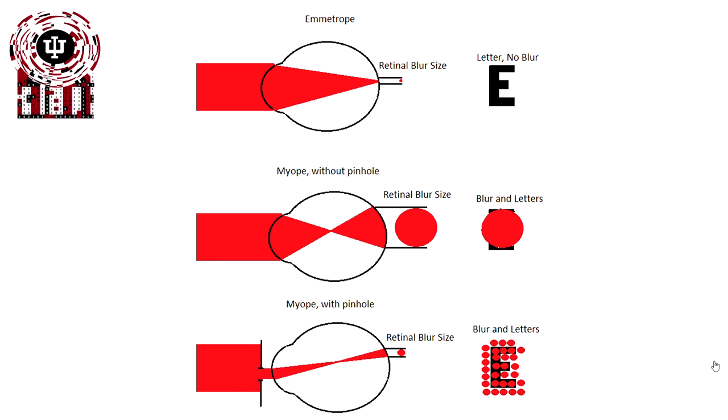Once we add in a pinhole, though, even though we're focused still in front of the retina, we've reduced the retinal blur size. Because the retinal blur size is small enough, we can now resolve that letter because the blur circle is small enough.